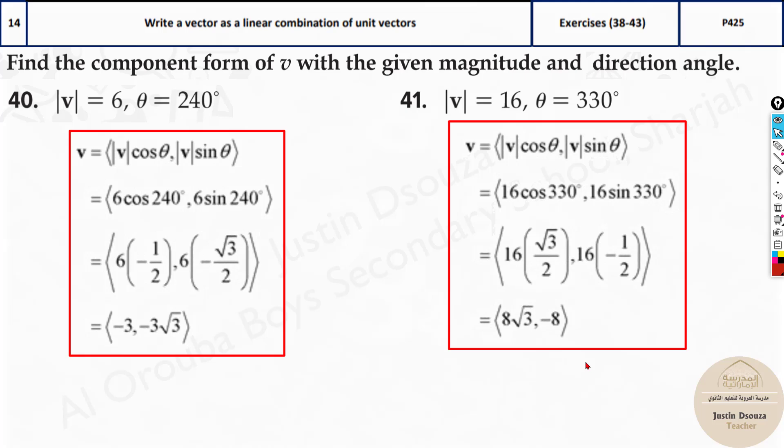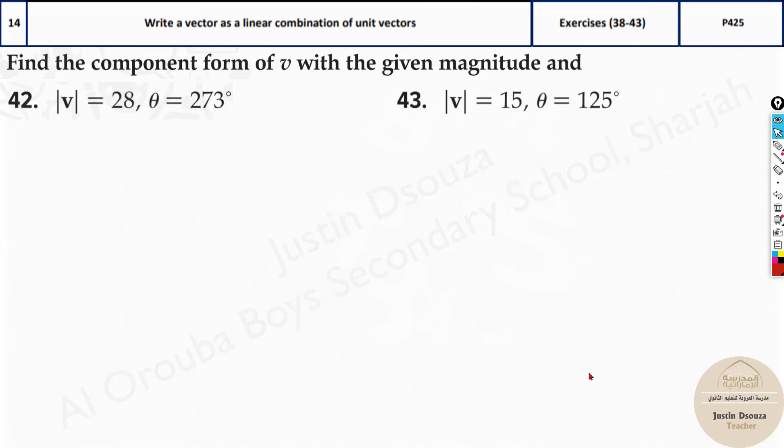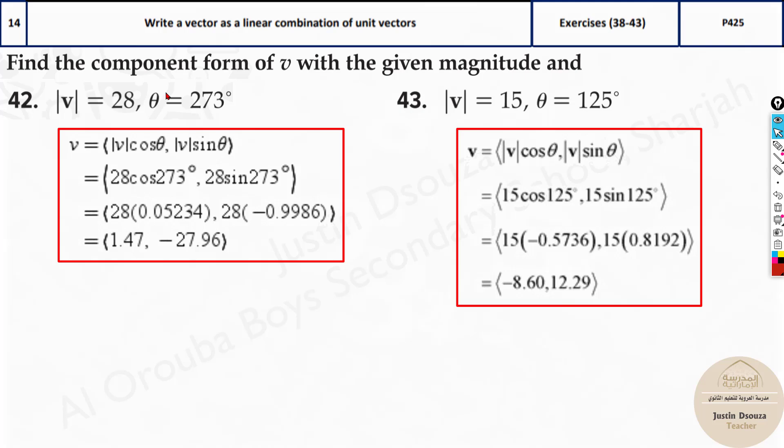So here are all the worked out solutions. Please go through them. Over here it is the same thing. We have 273 degrees, magnitude is 28. So it's 28 cos 273 and 28 sin 273.